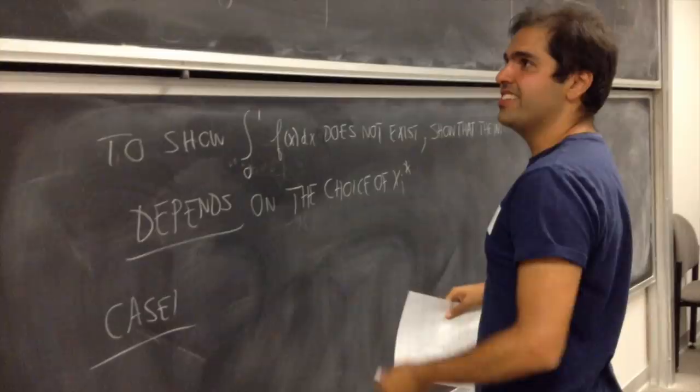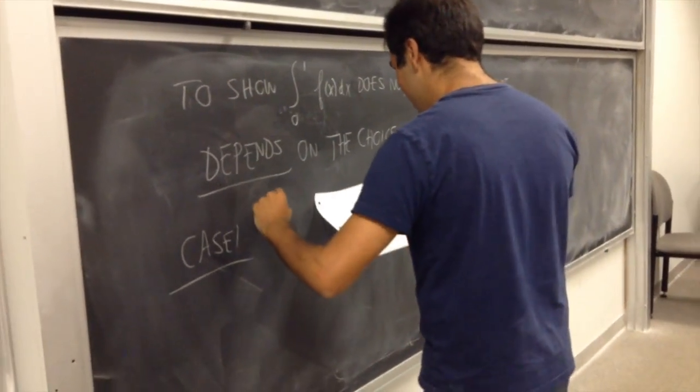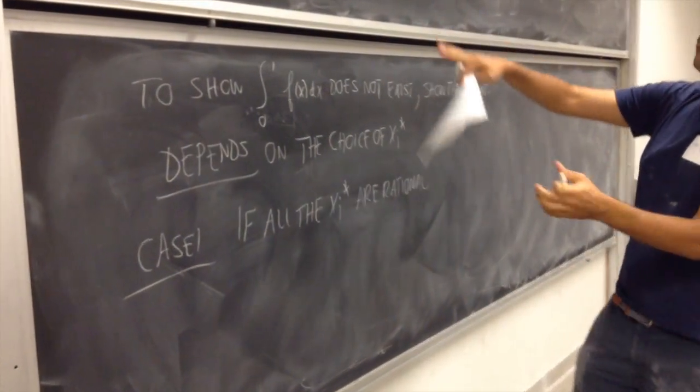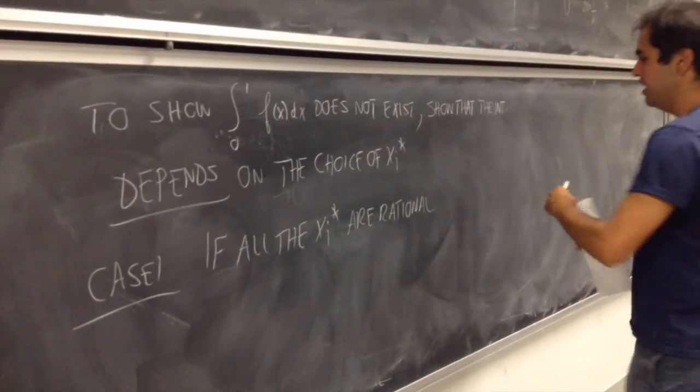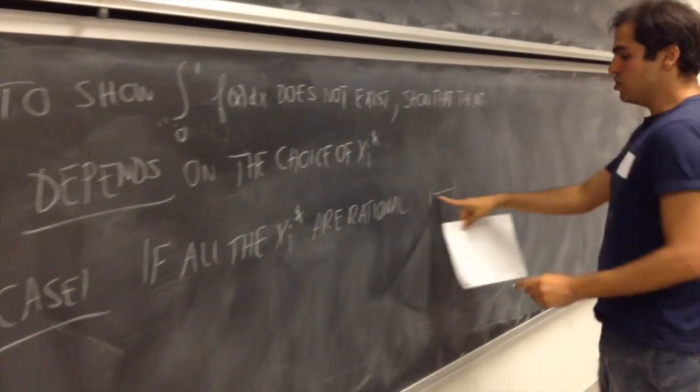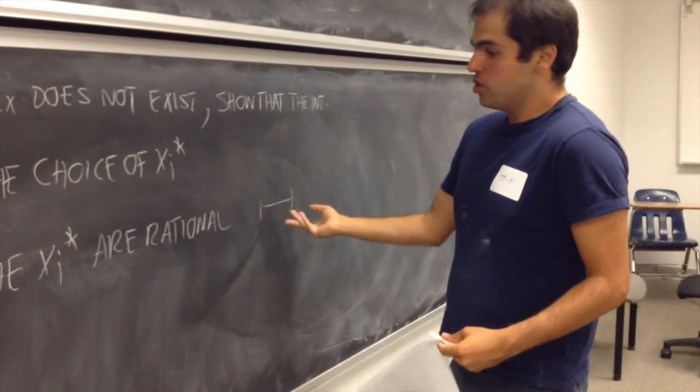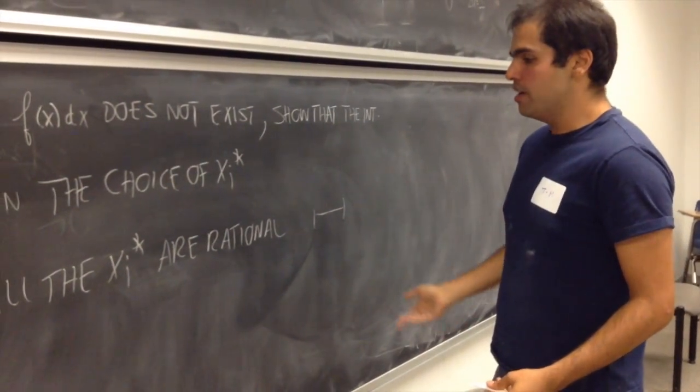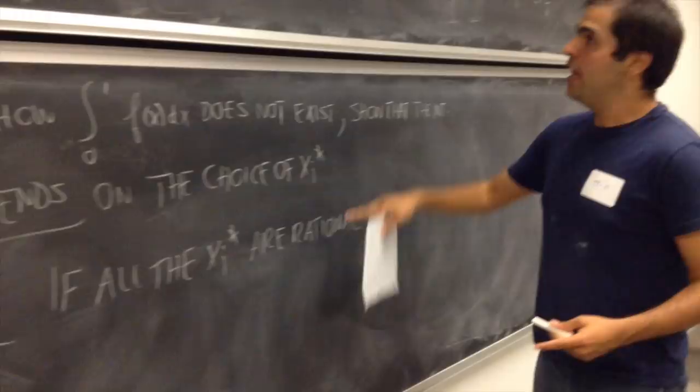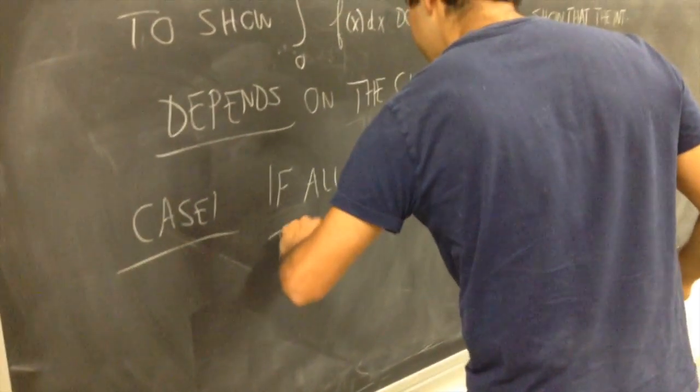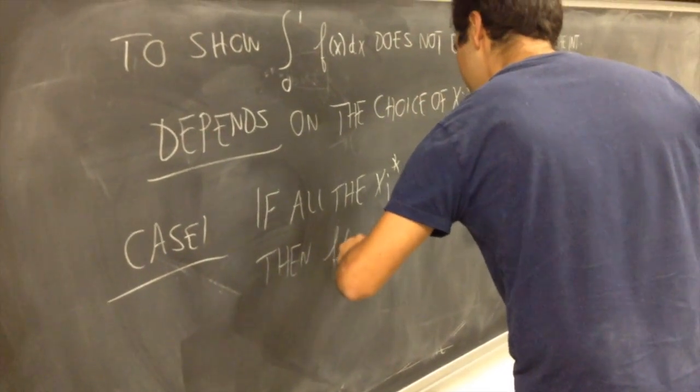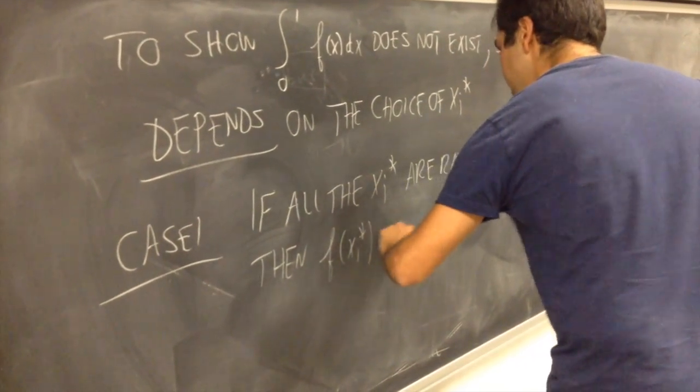If you choose all the xi stars to be rational, for example, one way you can do it is on each little interval, take just the midpoint of the interval, because the endpoints are rational, and the midpoint of the interval is still rational, then, by definition, f of xi star is always equal to 0.